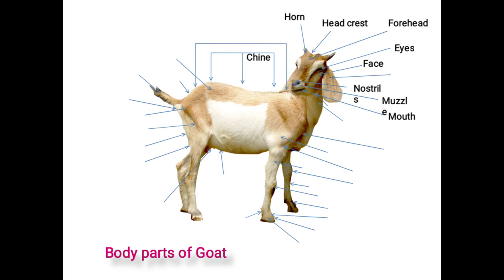Next are the eyes. Eyes are situated on each side of the nose bridge and comprise the eyebrow, eyelashes, eyelids, and eyeball. Their appearance may be defined as bright, dull, or sleepy. Next are the ears. Ears are located on both sides of the horns.